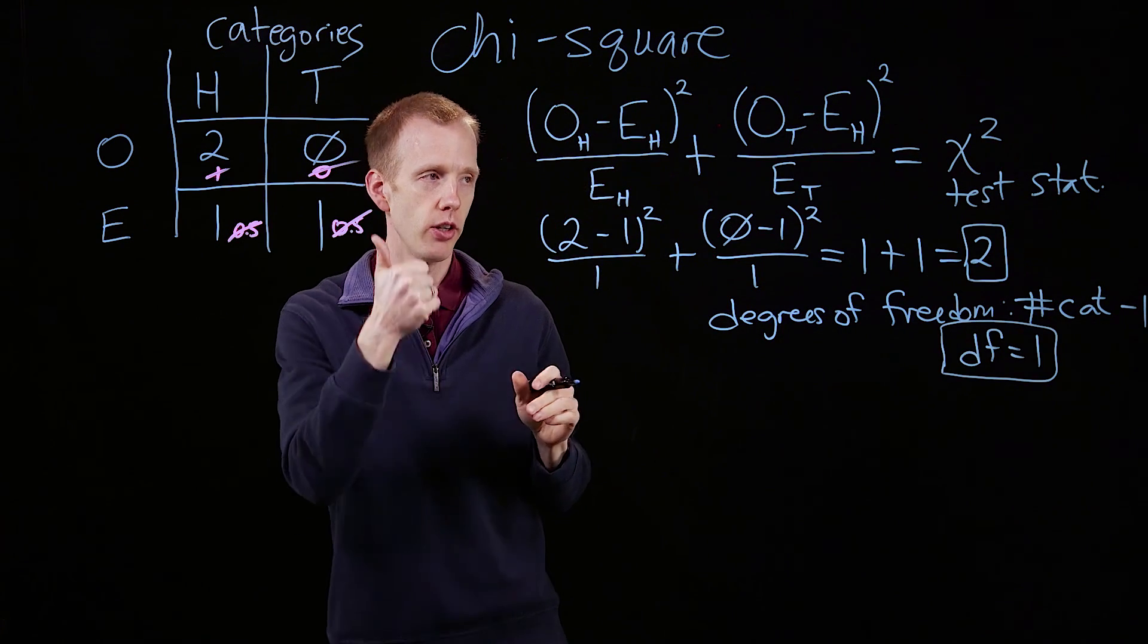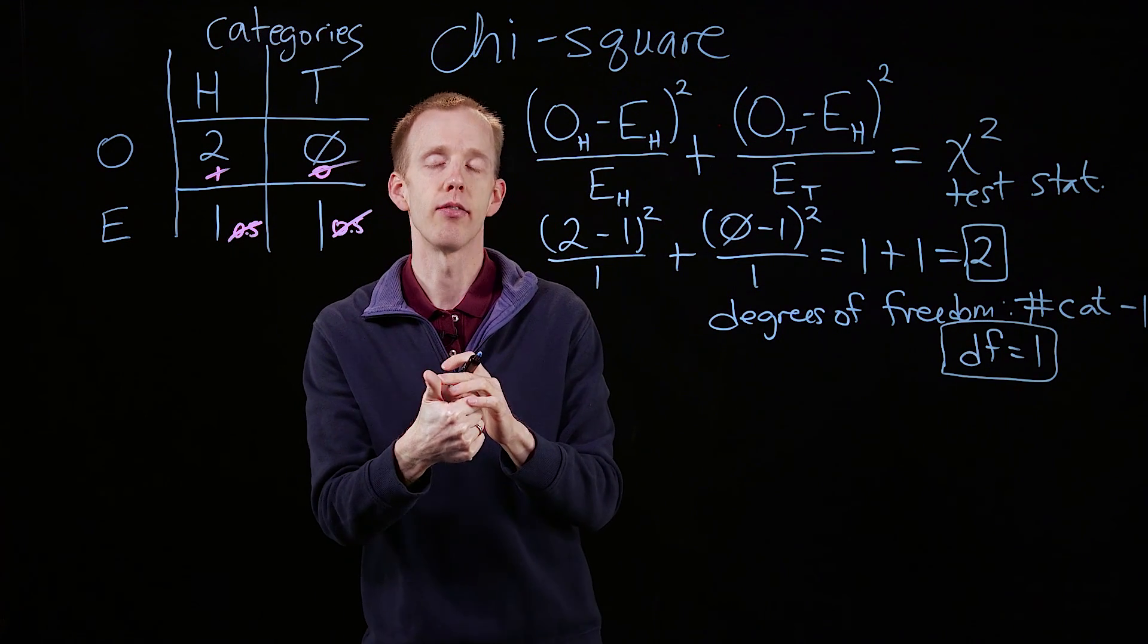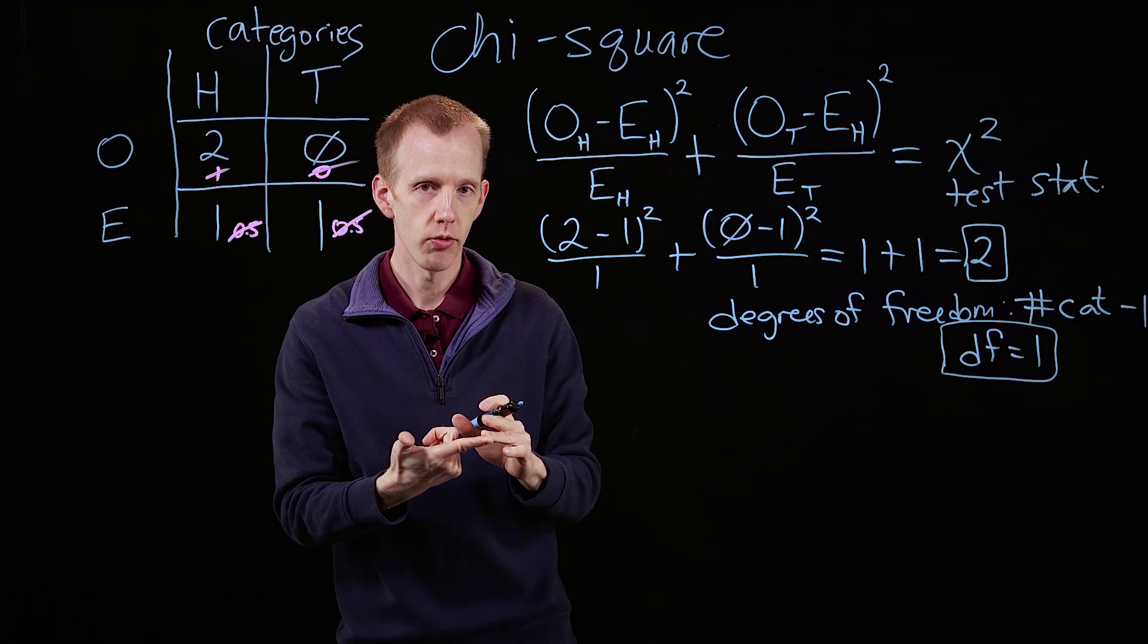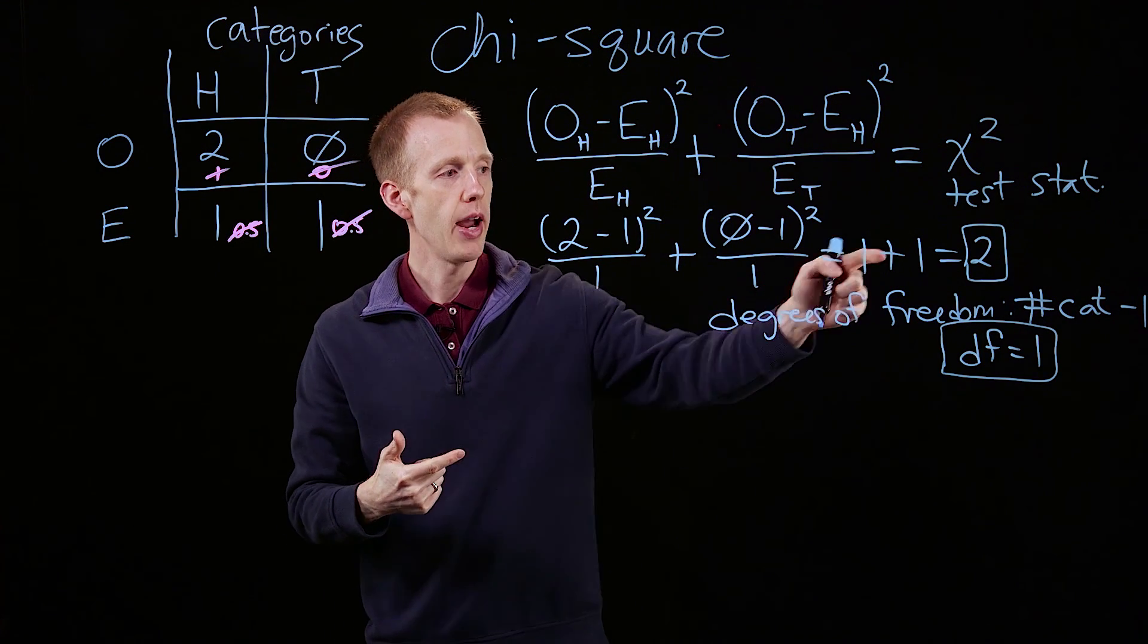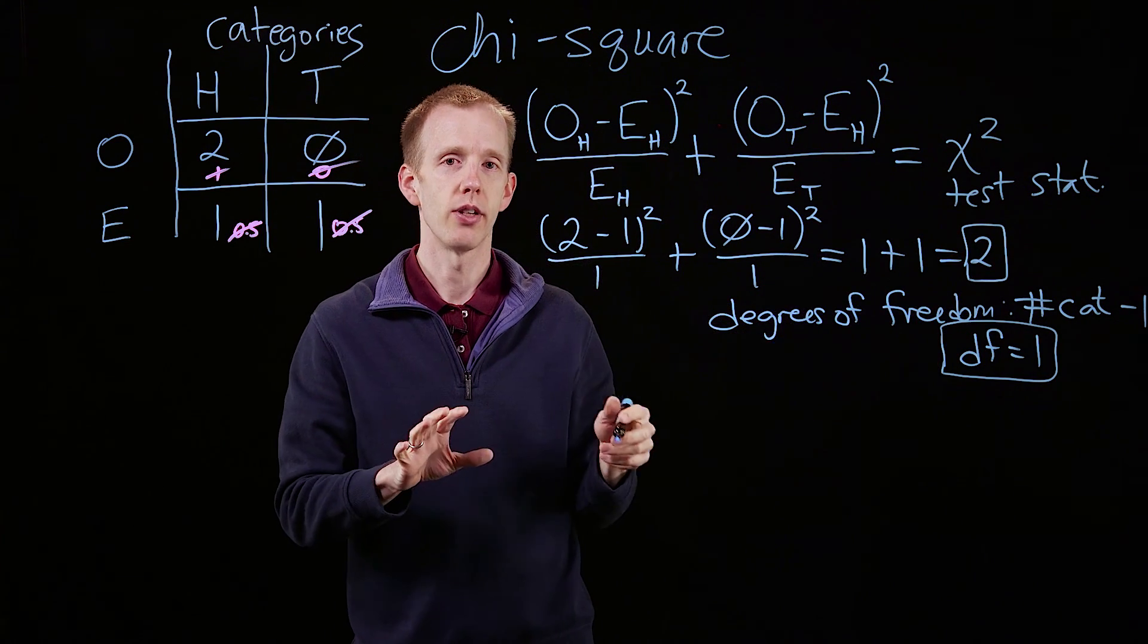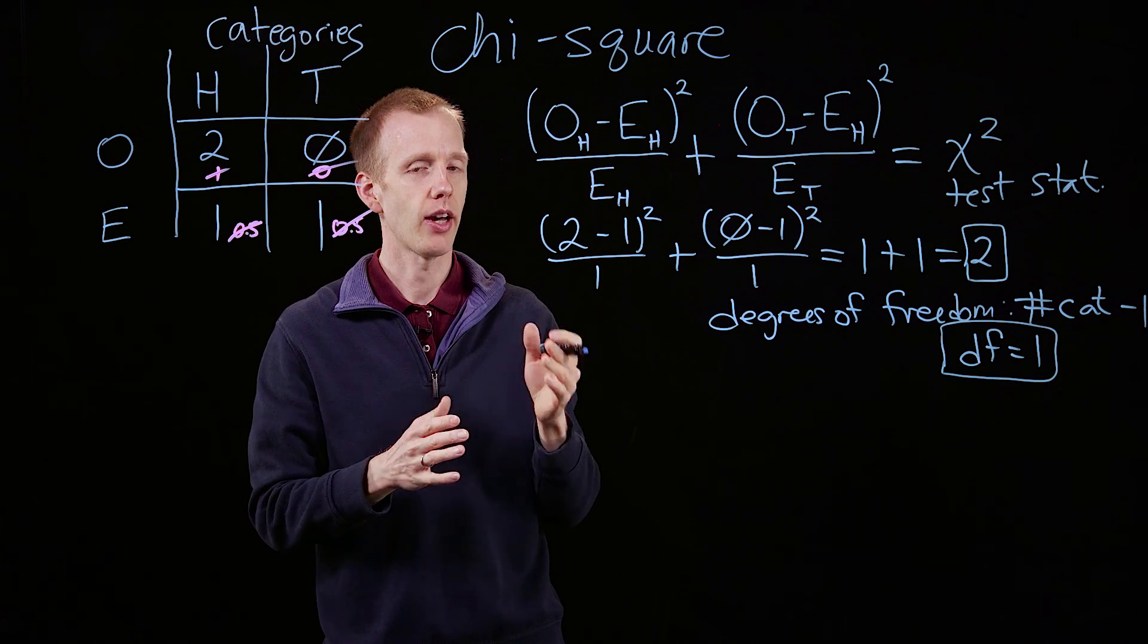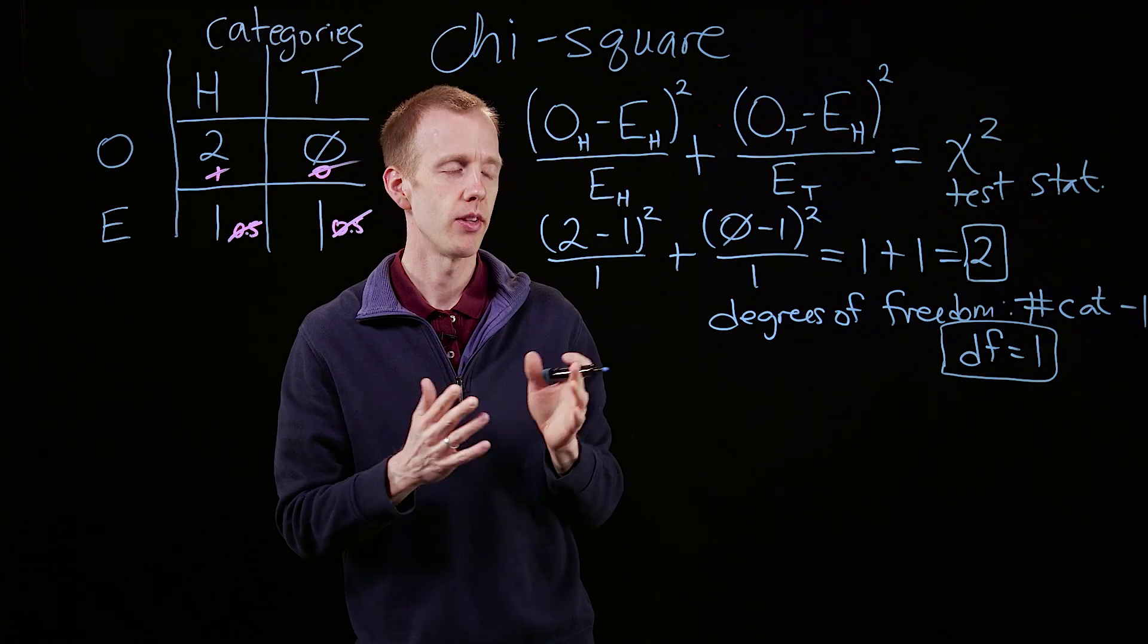With those two pieces of information, the chi-square test statistic value and the number of degrees of freedom, you can then compare, or look up, those two values in a p-value table, the chi-square distribution of p-values.